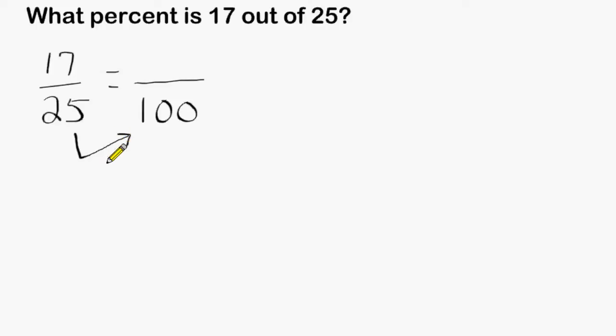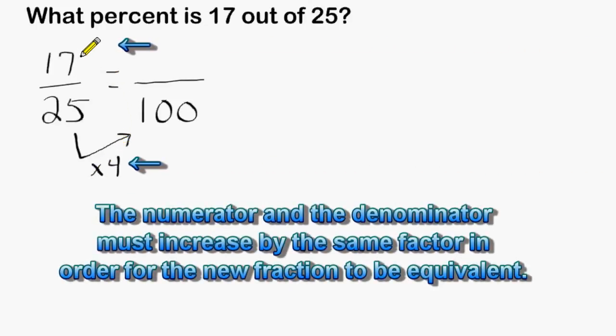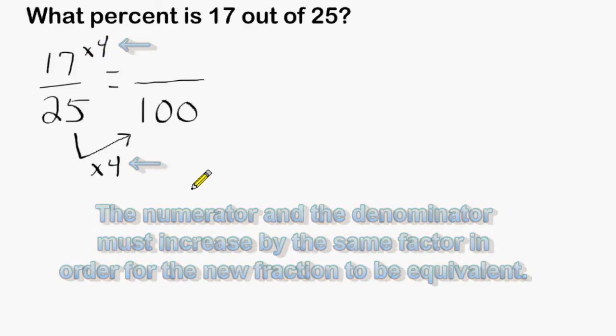Because 25 changes to 100, that increases by a factor of 4. And for this to be an equivalent fraction, the numerator will also have to increase by a factor of 4 as well.